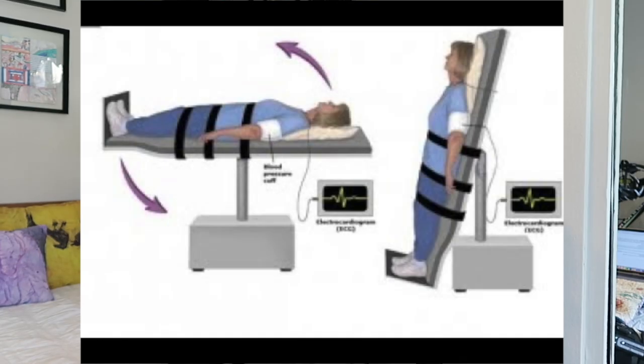The tilt table test is another way this can be done. You're lying down on a table, strapped in, and they can tilt you up and down however they want. They can monitor you a lot better and really control your position. If you do faint during a tilt table test, you're not at risk of hurting yourself — whereas if you faint while standing, you could fall and hit your head.